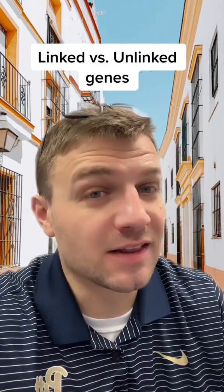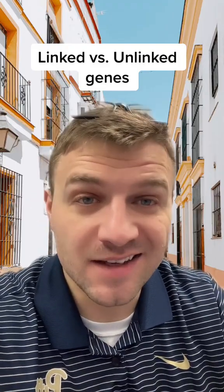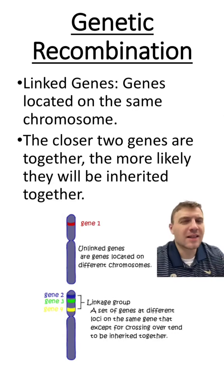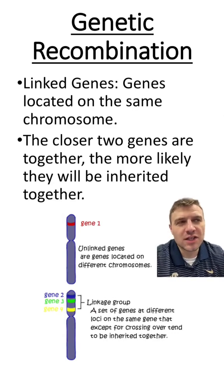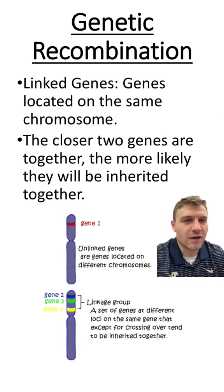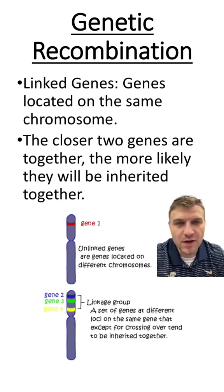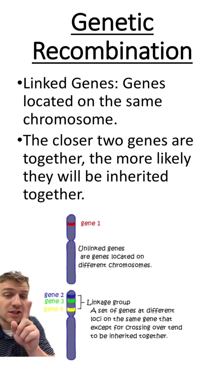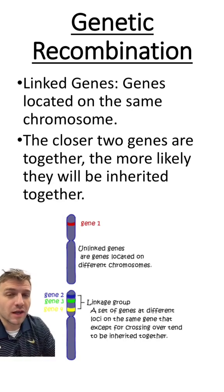Let's learn about the difference between linked and unlinked genes. Linked genes are genes that are located on the same chromosome. You can see genes 2, 3, and 4 are all located on the same chromosome.